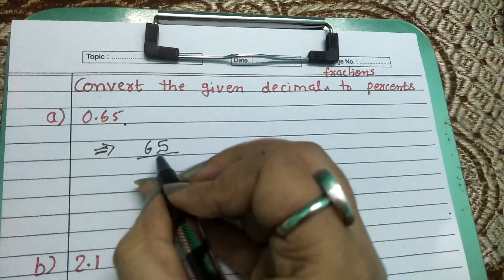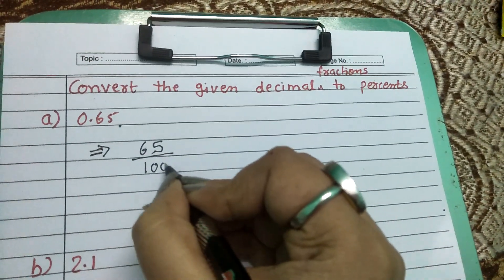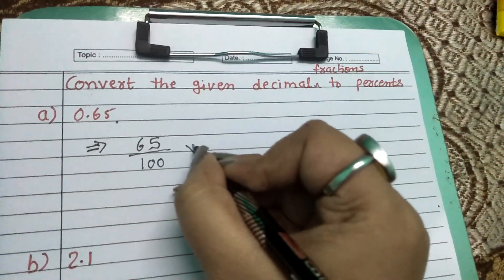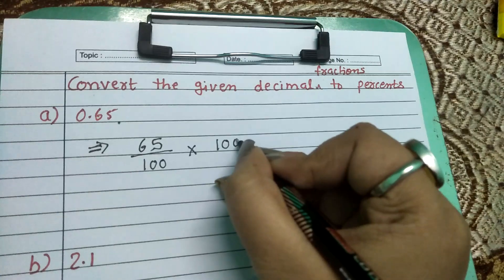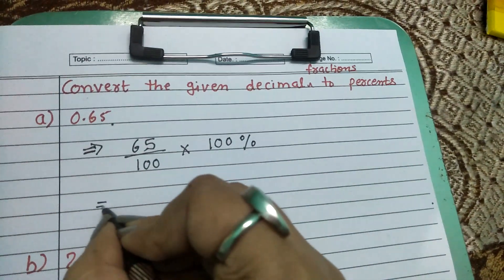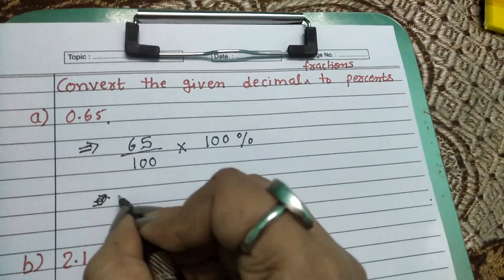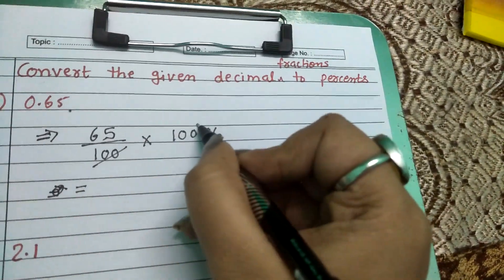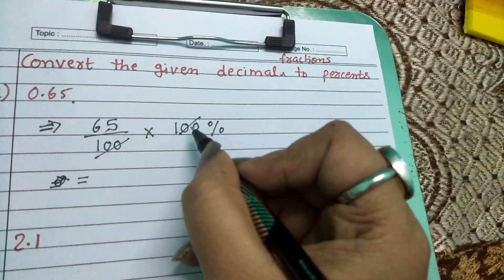To convert it into percent, we multiply it by 100 percent. Hundred and hundred cancel out, because this hundred is in the numerator and this is in the denominator.